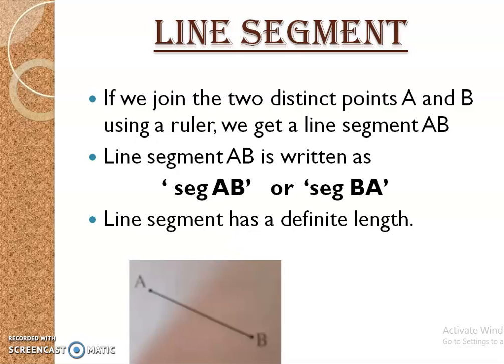Line Segment: If we join two distinct points A and B using a ruler, then we get a line segment AB. Line segment AB is written as segment AB or segment BA. The line segment has definite length.